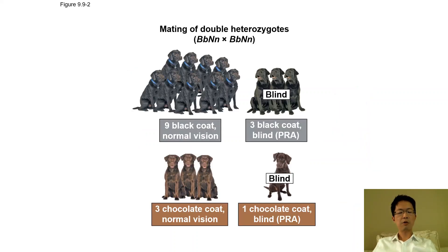When you perform an F2 dihybrid cross, you get a similar 9:3:3:1 phenotypic ratio — consistent with the Labrador retriever example we discussed.